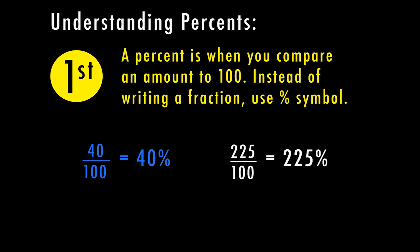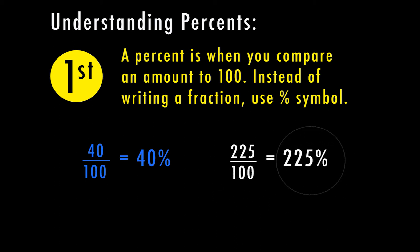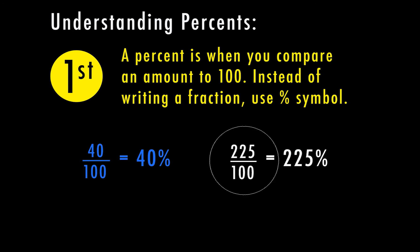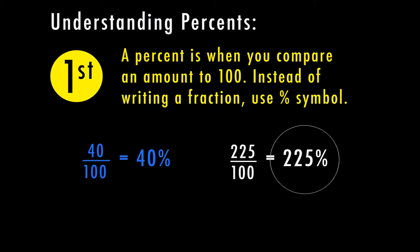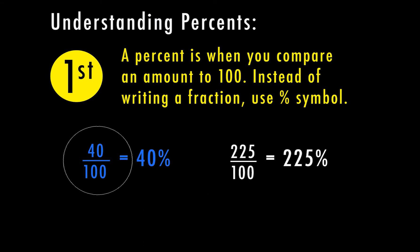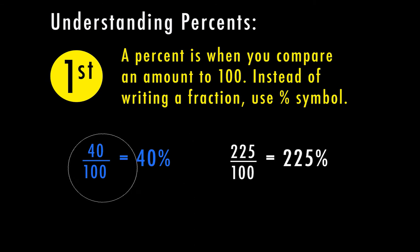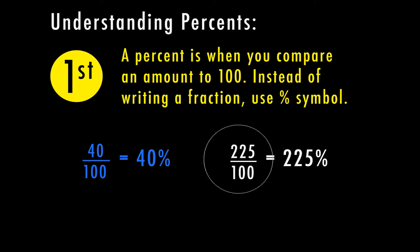In the same way, 225 over 100 equals 225 percent. Anytime the numerator is greater than 100, we're going to have a percent greater than 100. If your numerator is not greater than 100, your percent will be less than 100. This 100 represents the total, so anytime they talk about a percent, they're talking about how many out of 100.